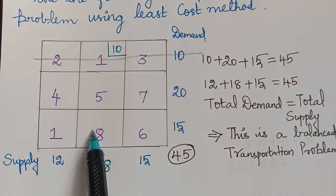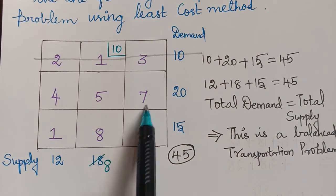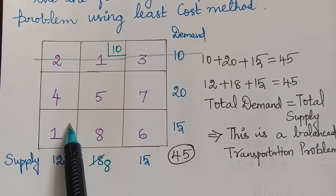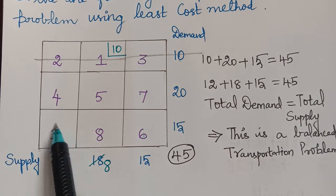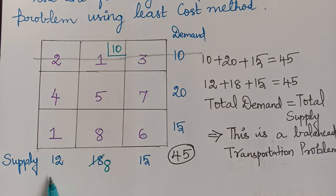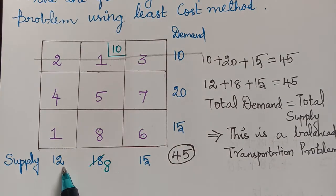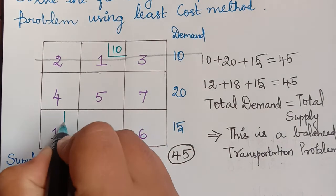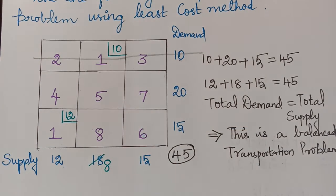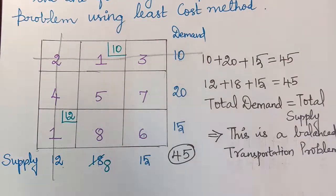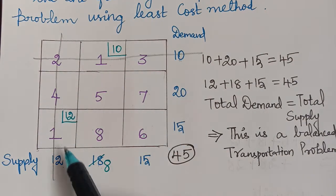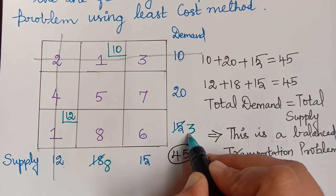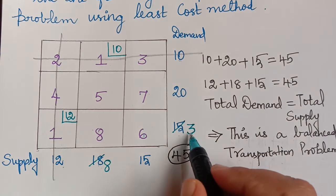From the remaining cells, we choose the minimum cost element, which is again 1. We give the allotment for this cell. The demand is 15 and the supply is 12, so supply is lesser. We give the allotment of 12, completely strike off that column, and subtract 12 from 15 to get the remaining demand of 3.